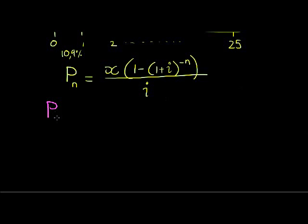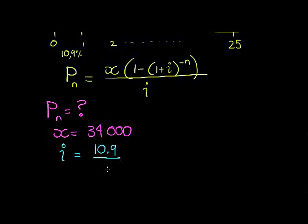Do we know what the present value of this loan is? No, we don't. Do we know the amount that he is paying back? Yes, it's $34,000 every four months. Do we know the interest rate? Yes, it's 10.9% interest every four months—sorry, 10.9% every year.